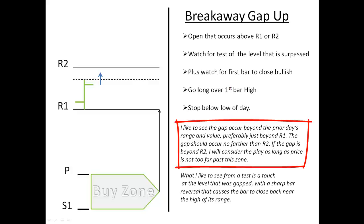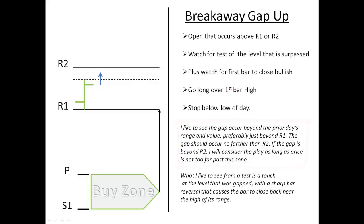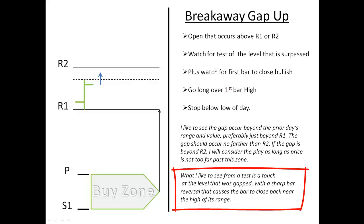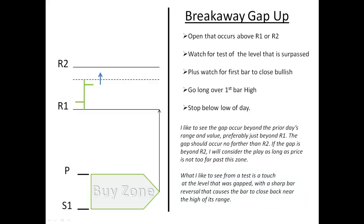You want to see the gap occur beyond the prior day's range and value, preferably just beyond the R1. I don't like to see it open too far beyond R1 — the gap should occur no further than R2. If it happens beyond R2, I'll consider playing it, but as long as it's not too far past R2. Getting past R2, you're getting into some pretty rarefied air and it doesn't work as well, but it can. What I like to see is a test or touch at that level that was gapped over, and then a sharp bar reversal like a hammer pattern that causes the bar to close back near the high of the range. If you don't get that but it still closes bullish, that's fine too — you're going to take that trade above the high of that bar and use the low of that bar as your stop. It's a very safe way of taking a breakout.